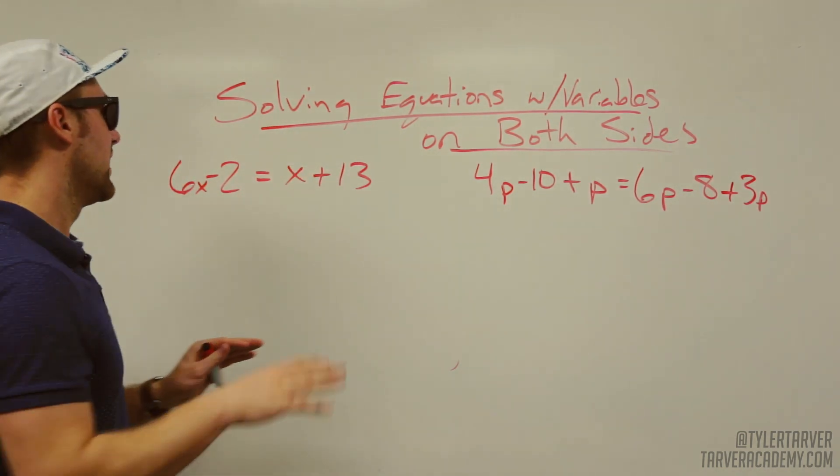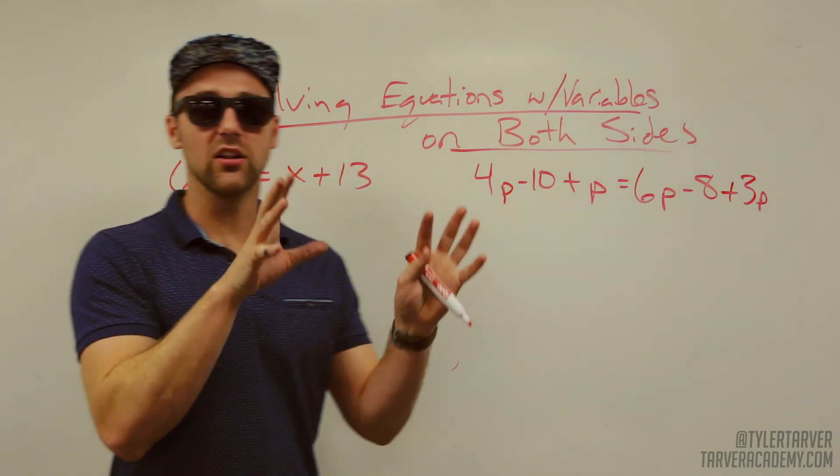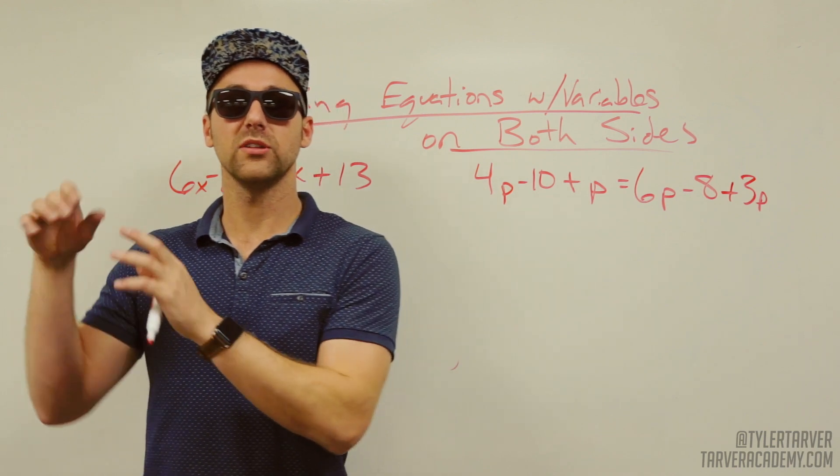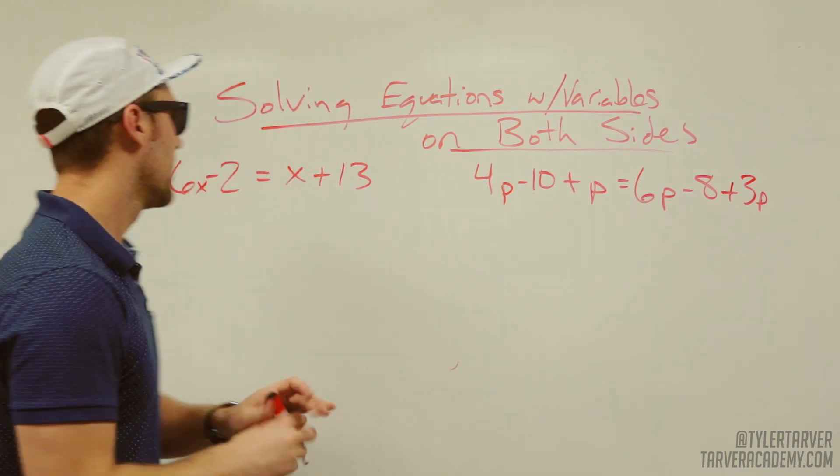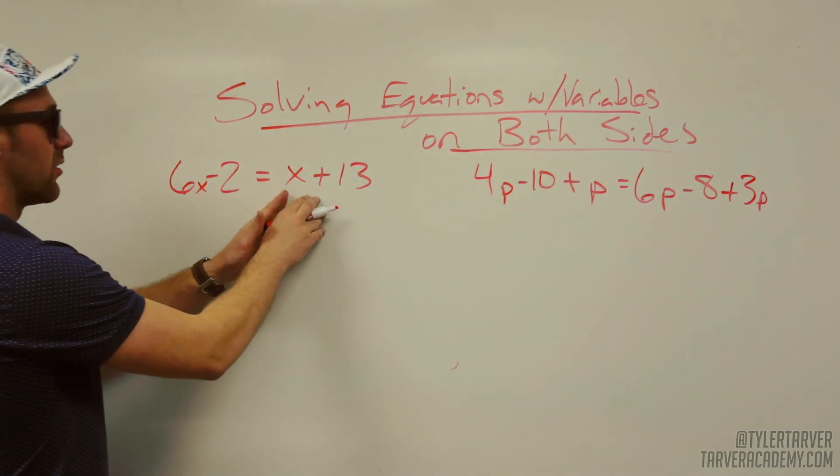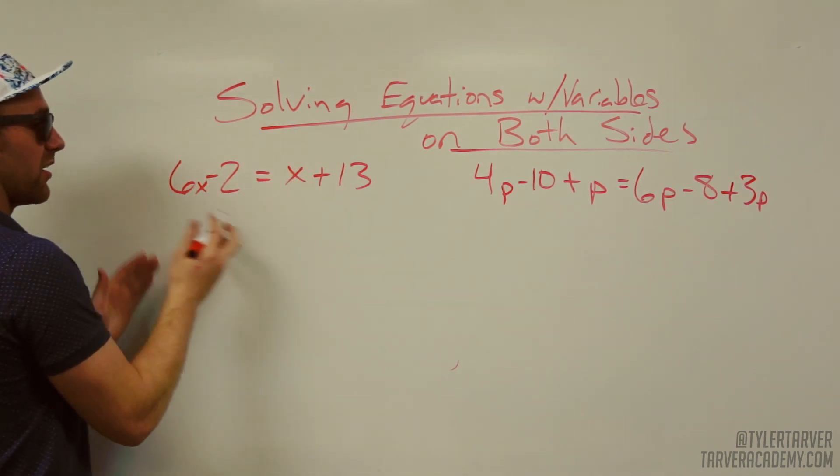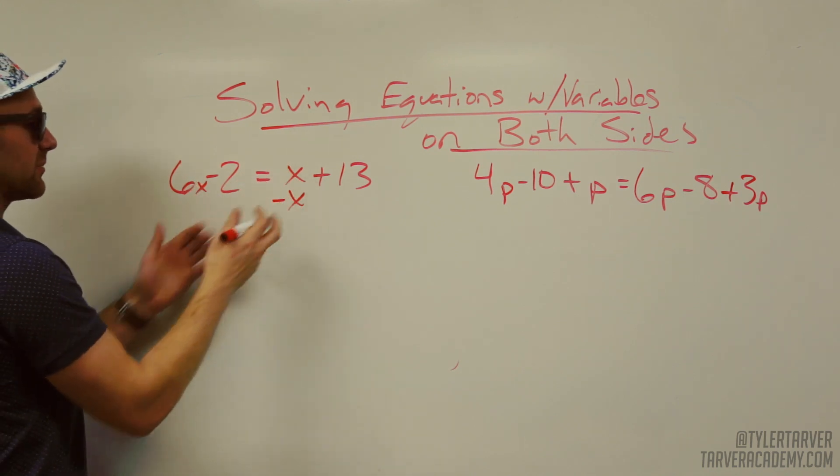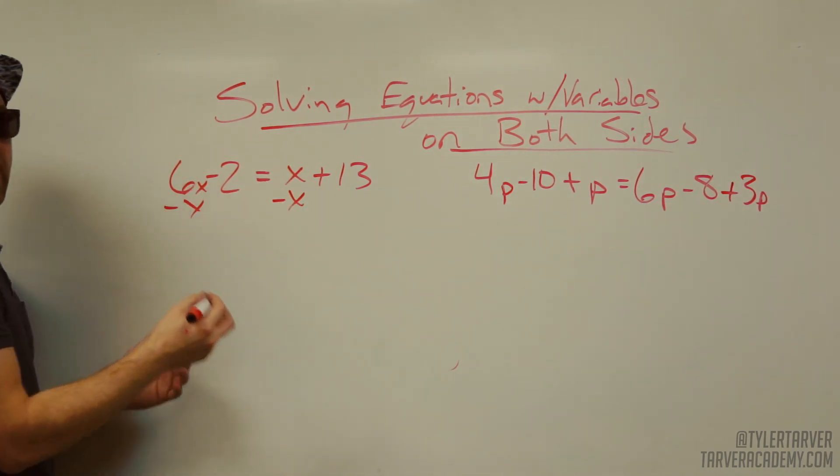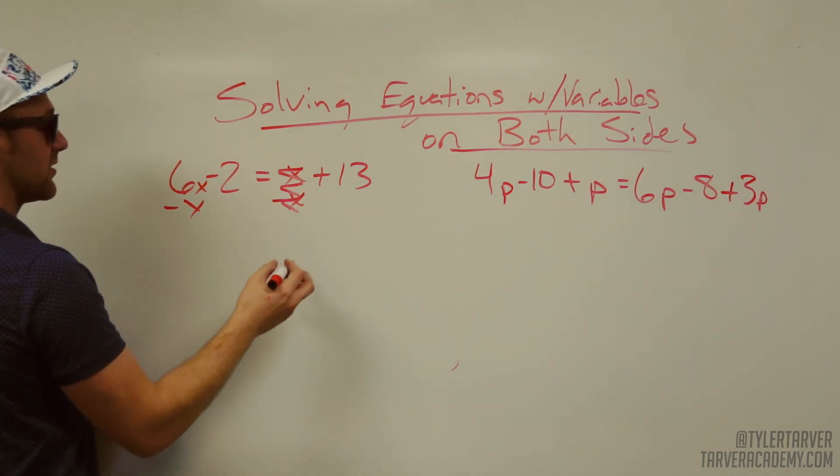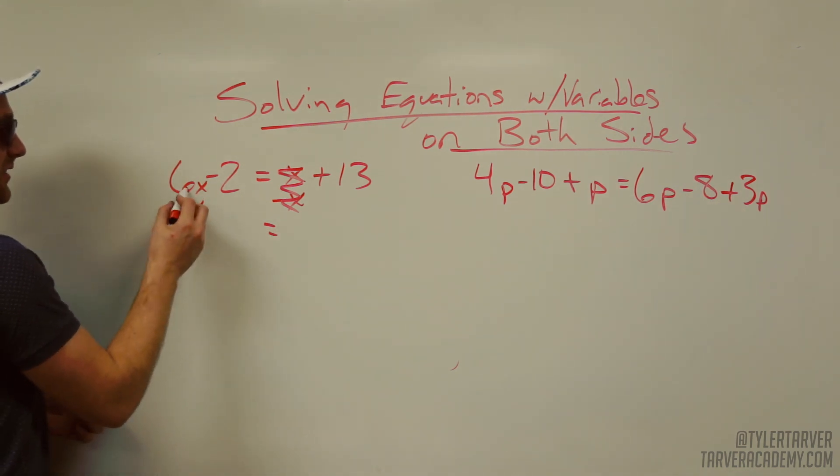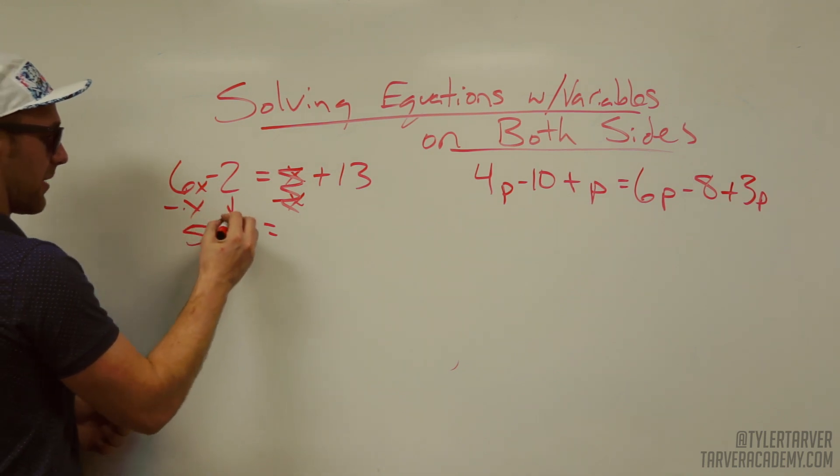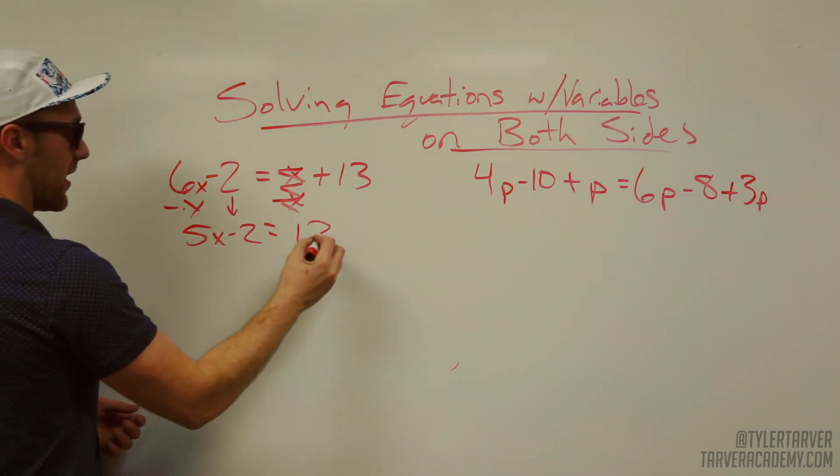My advice is always get the smaller x, the smaller number with a variable, to the side with the bigger number. Here we go. 6x, just 1x, this one's smaller, get it over here. So we subtract x, because the opposite of adding x is subtracting. If I do it from that side, I've got to do it from that side. It cancels out there. 6x minus x, 6 minus 1 is 5x. I'm going to carry down my negative 2, carry down my positive 13.